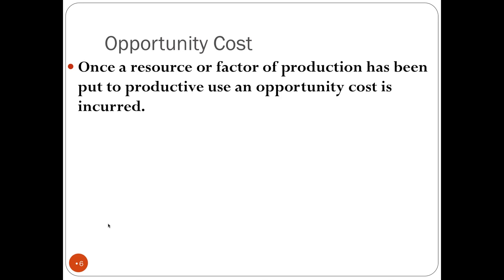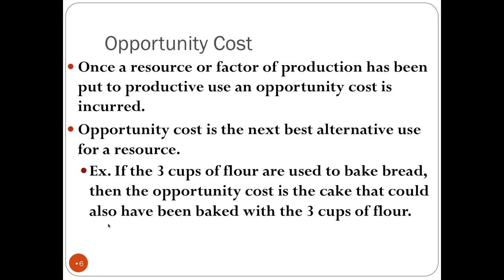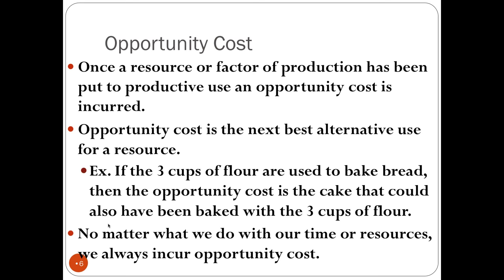So, opportunity cost: once a resource or factor of production has been put to productive use, an opportunity cost is incurred. The opportunity cost is the next best alternative use for a resource — the most valuable thing you gave up when you decided to do something. For example, if three cups of flour are used to bake bread, the opportunity cost is the cake that could have been baked with those three cups. No matter what we do with our time and resources, we always incur an opportunity cost. Whenever we spend money on one thing, we give up the ability to spend it on something else.